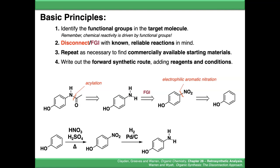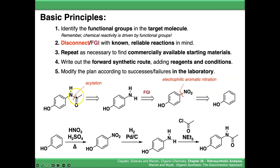We can reduce the nitro group with hydrogen and palladium on carbon. Then we can acylate it with an acid chloride and a weak base.